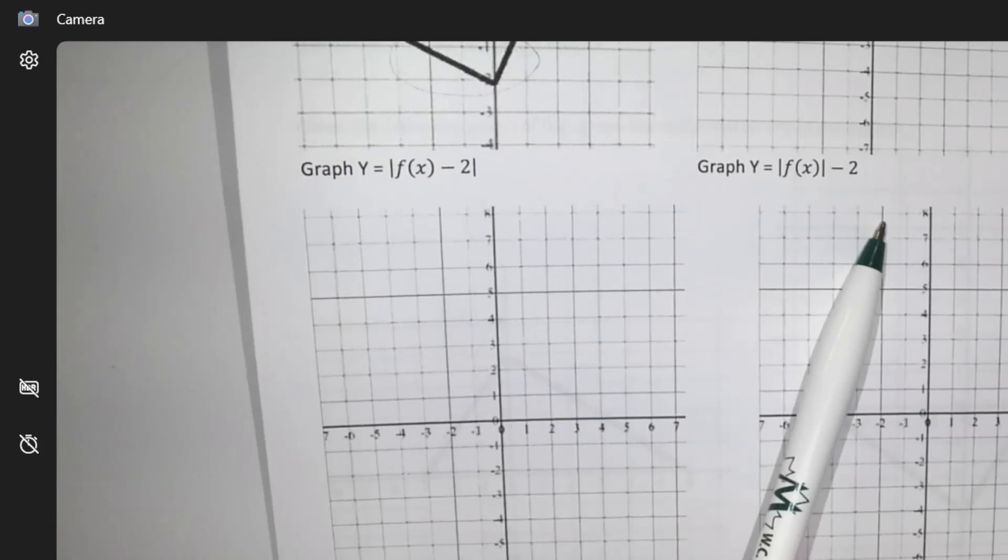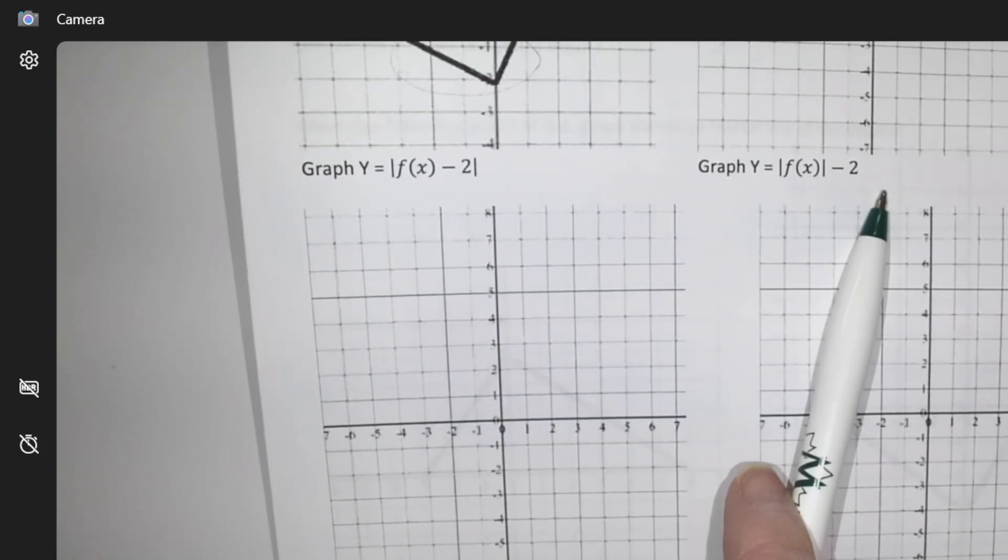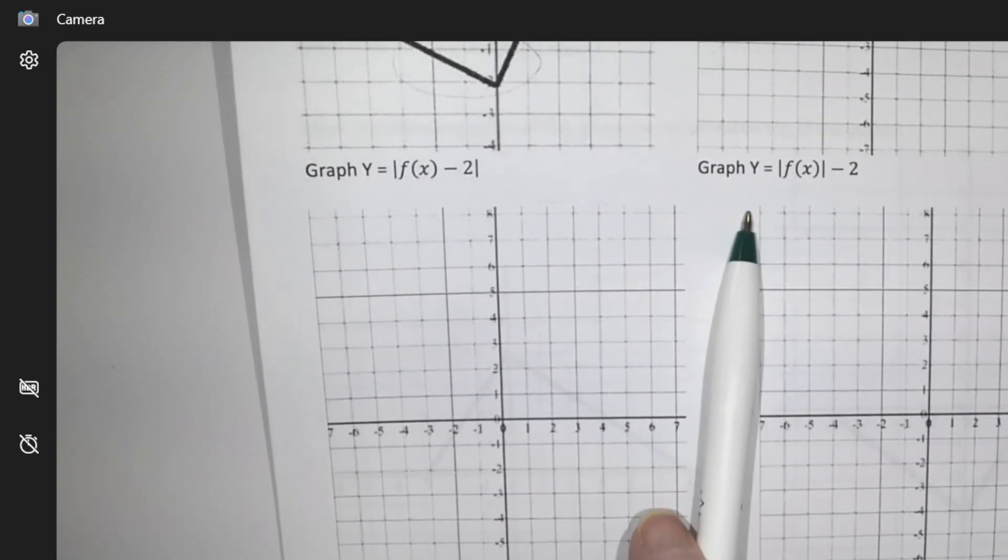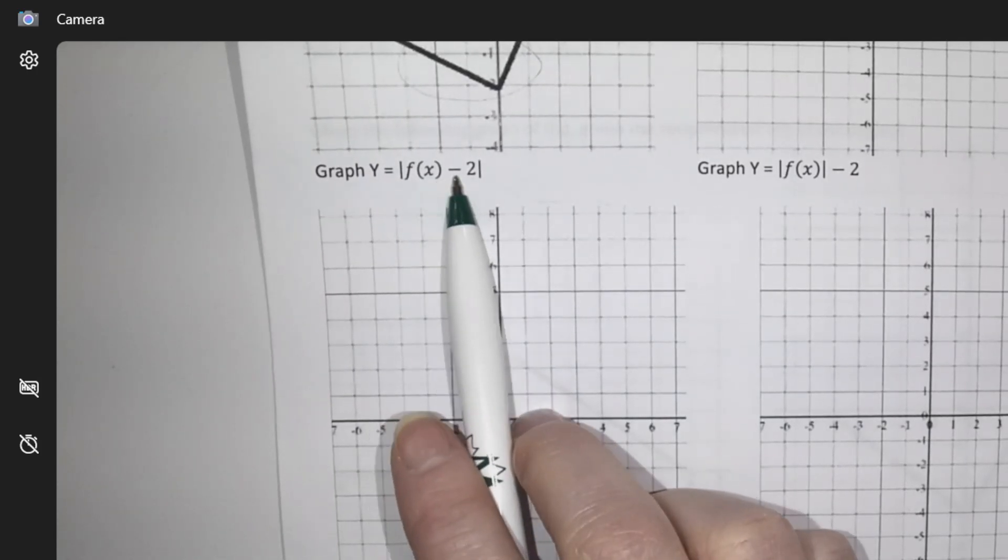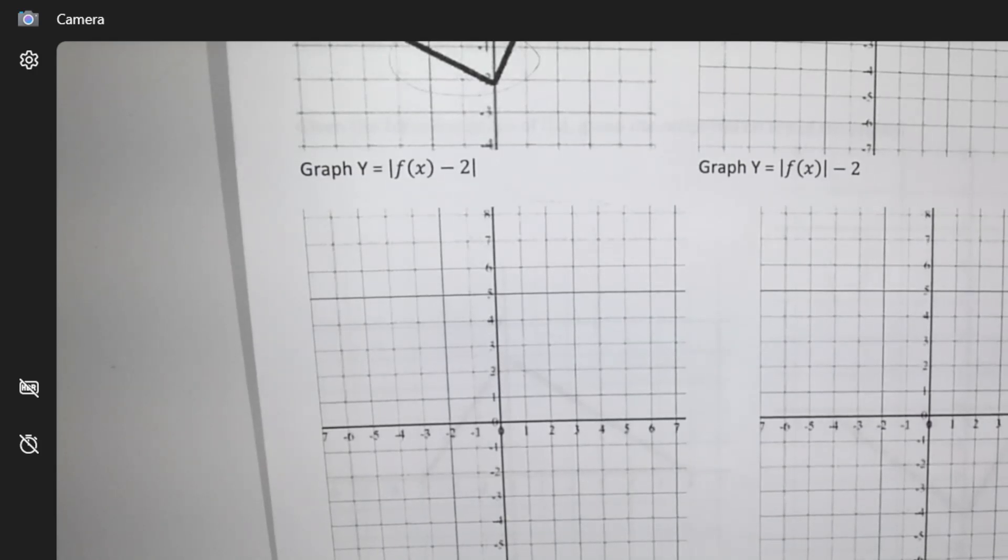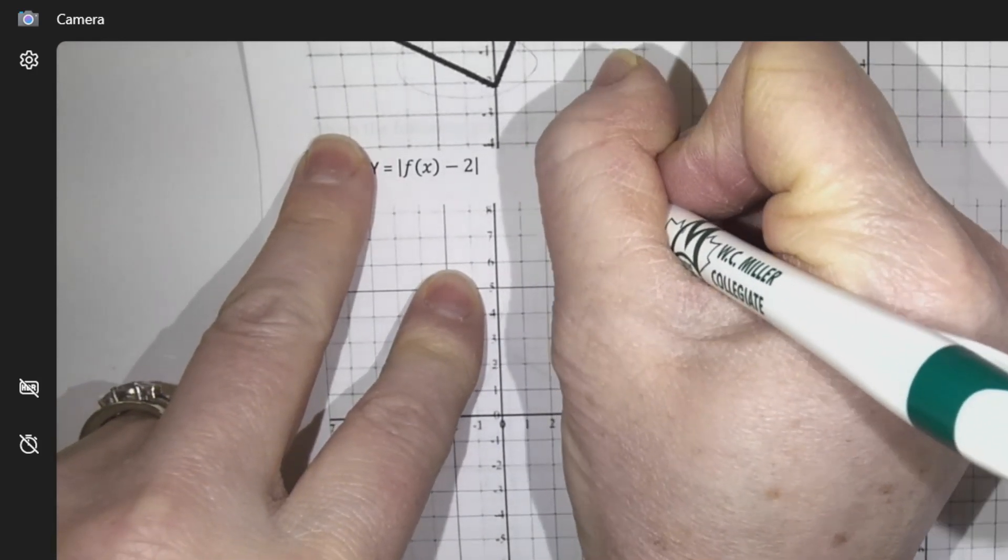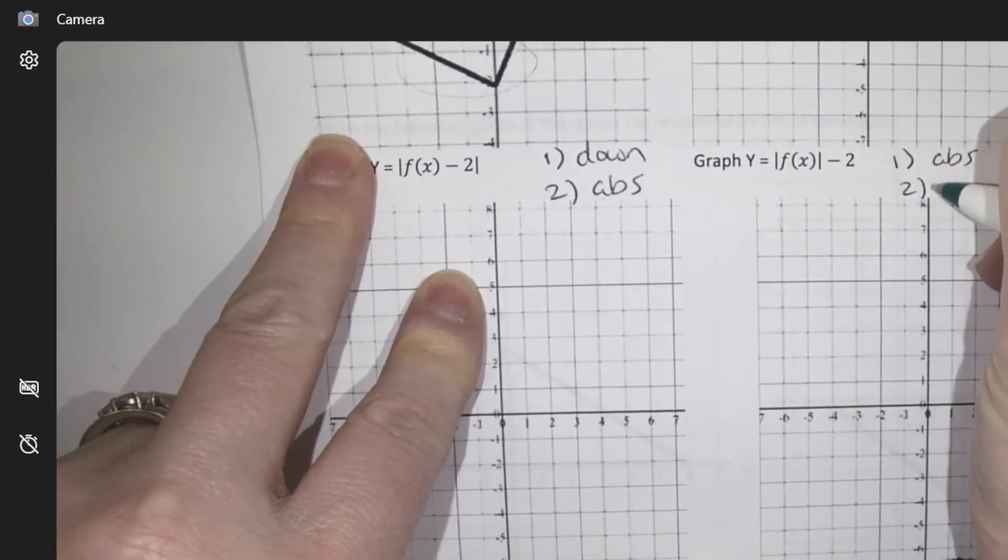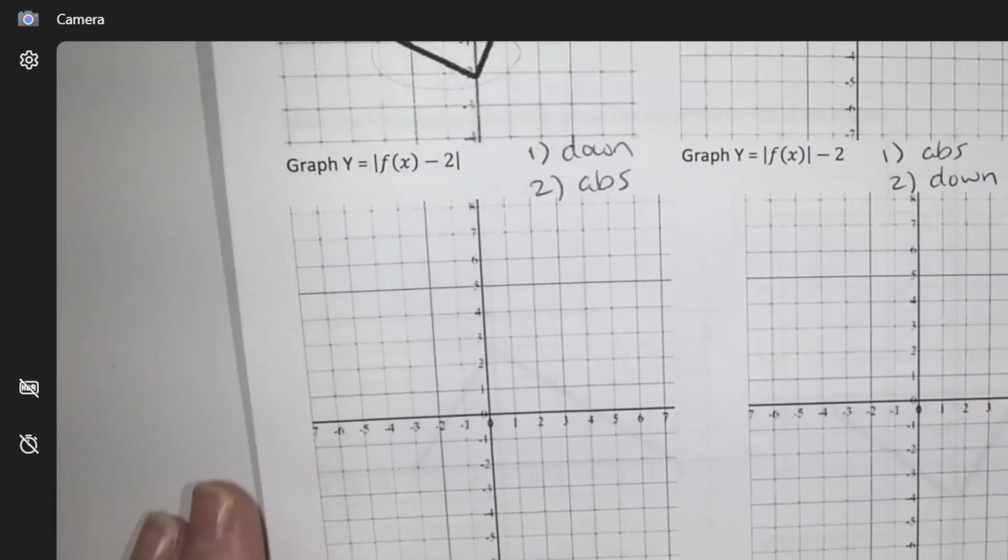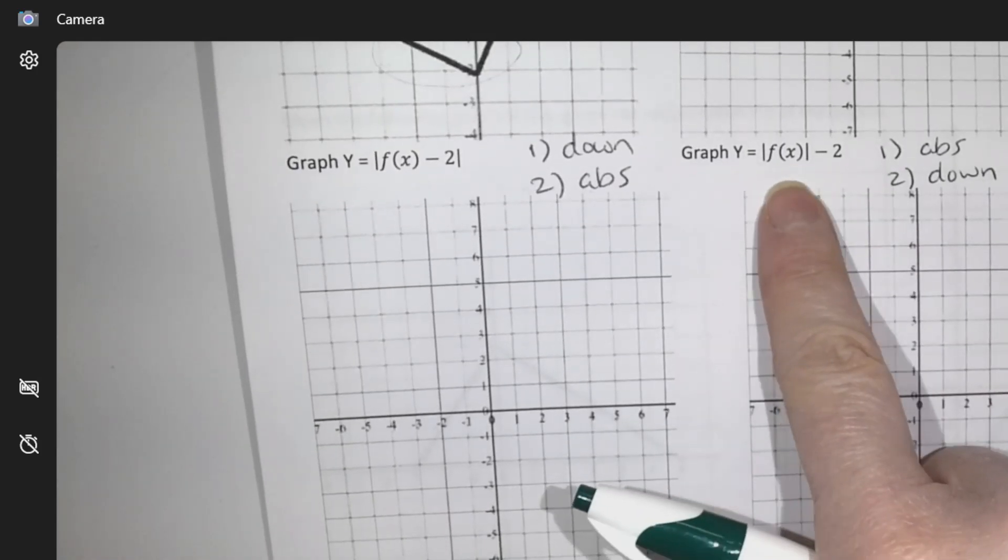These minus 2s are actually both considered Ds. Do you see it? Because it's outside the bracket, it's a D. This is a D as well. So there's absolute valuing and moving something down, but these are completely different graphs. Why? It's because of the order. So in this one, it says I should move down 2 and then absolute it. This one says I should absolute it and then move down 2.